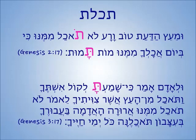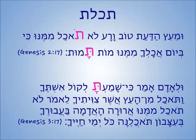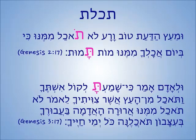Here is an example of the taf at the beginning, from Genesis 2:17: 'Lo tochal mimenu' — you will not eat from it. The taf at the beginning means 'you will.' 'Ki bayom achalcha mimenu' — and in the day of your eating from it — 'mot tamut' — a death you will die. The taf at the beginning of tamut means 'you will die,' so literally it says a death you will die, usually translated as you will surely die. So the taf at the beginning is for the future tense — you will do something.